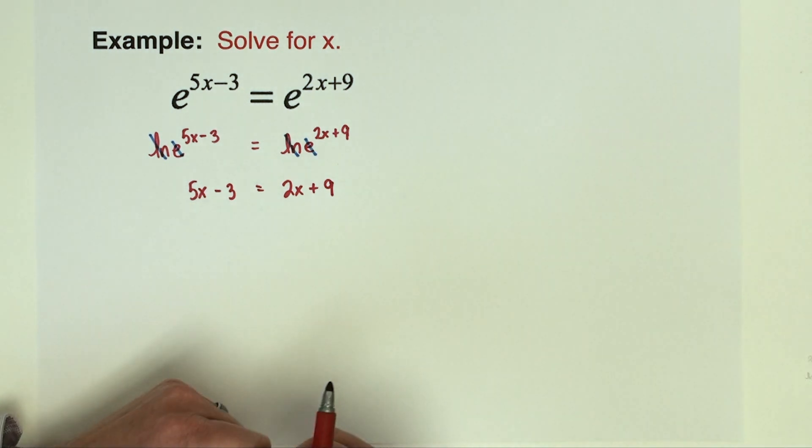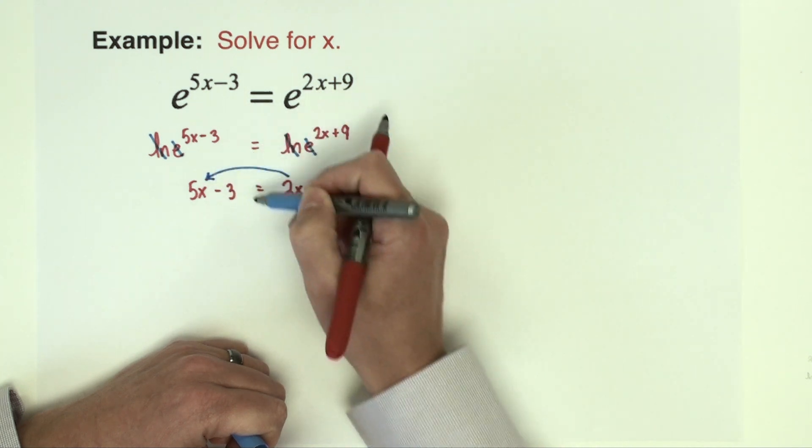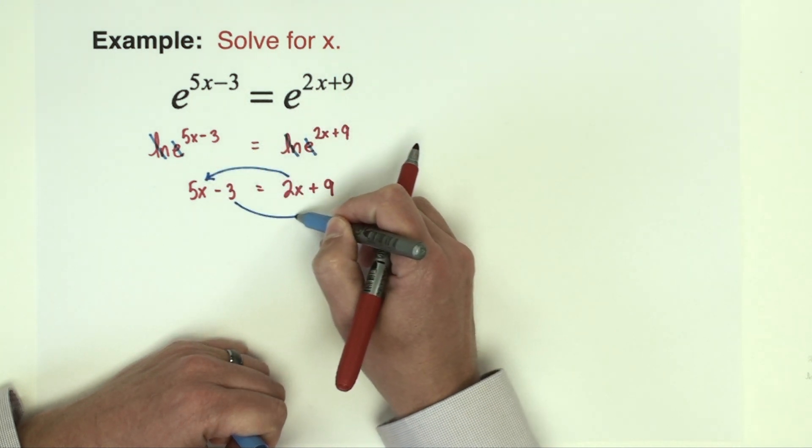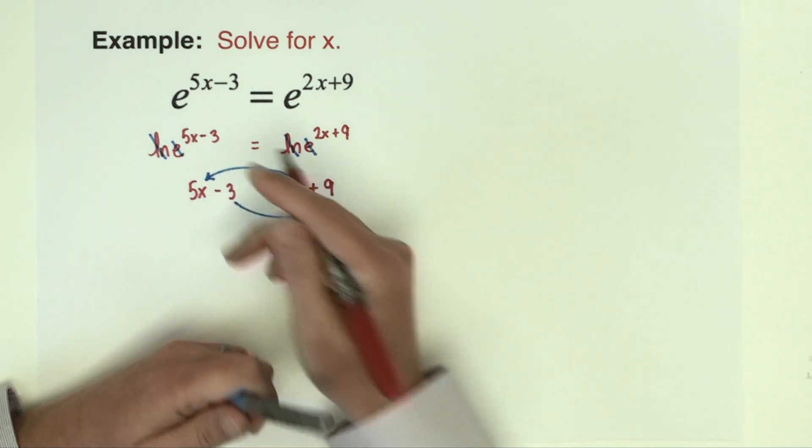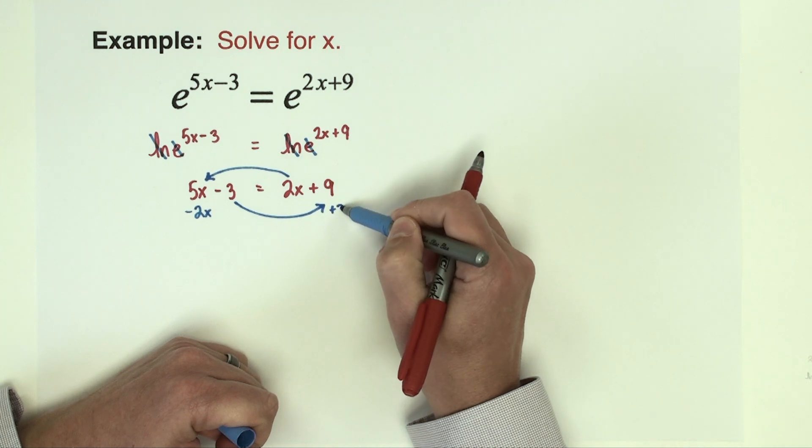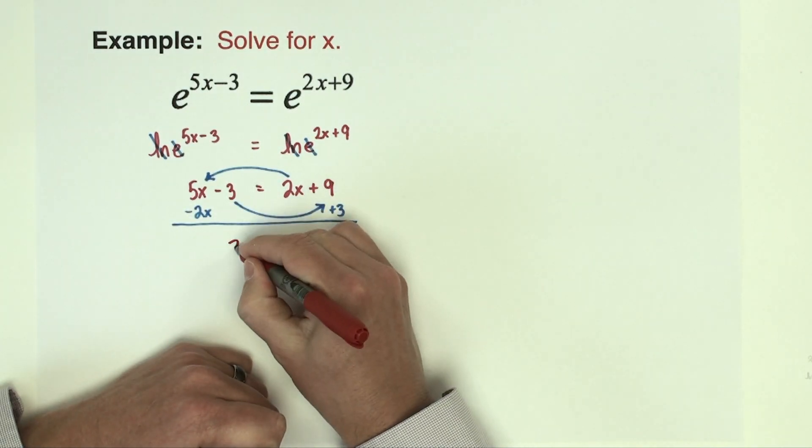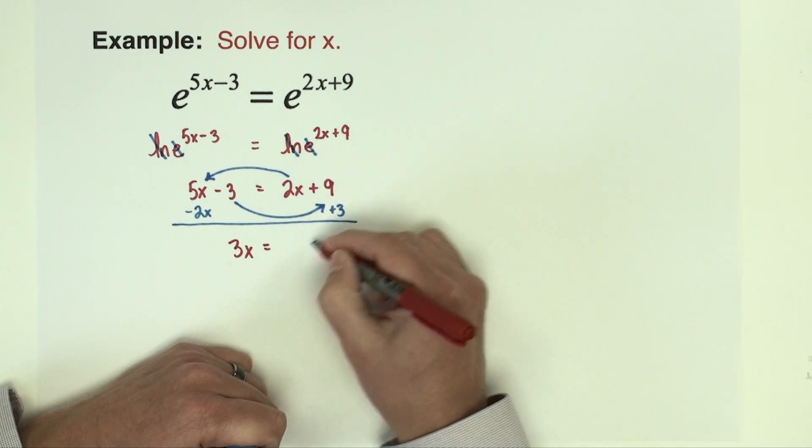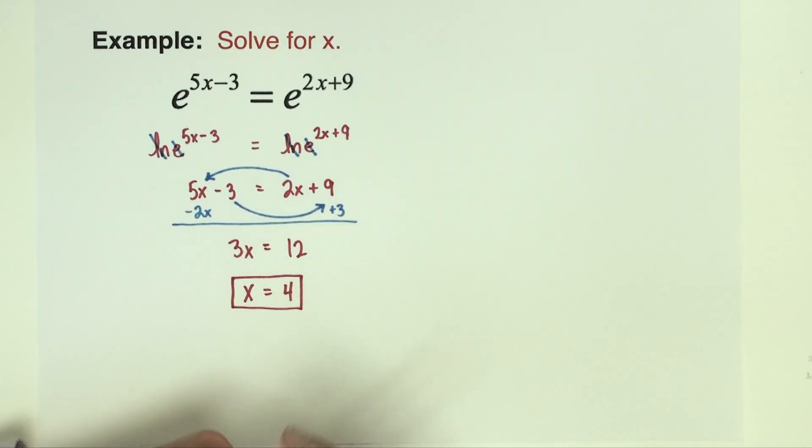I'm going to take the 2x, I'm going to subtract it to that side, the minus three and add it to this side. So if I do that, let's do this, minus 2x plus 3. I'm now going to have 3x equals 12, divided by three, x equals four, and that concludes the problem.